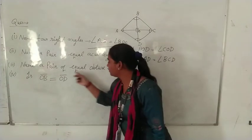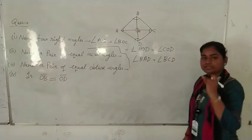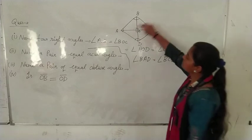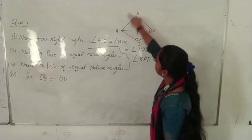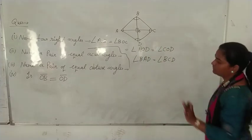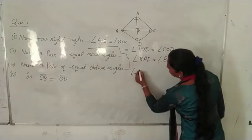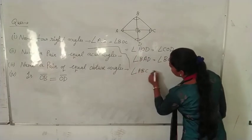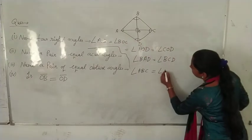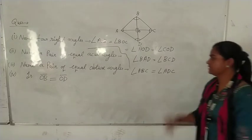Third question: name a pair of equal obtuse angles. Obtuse angle is which is greater than 90 and less than 180. Here, angle ABC and angle ADC. One pair of obtuse angles: angle ABC is equal to angle ADC, equal obtuse angles.